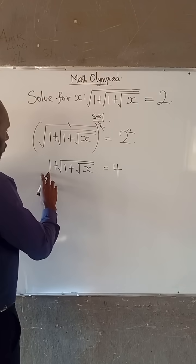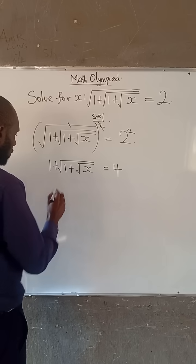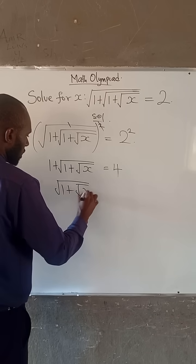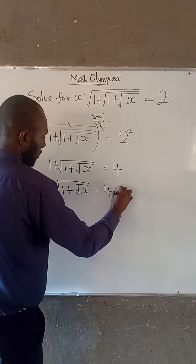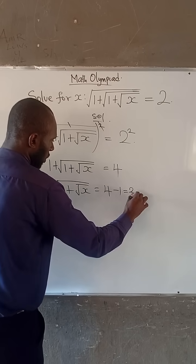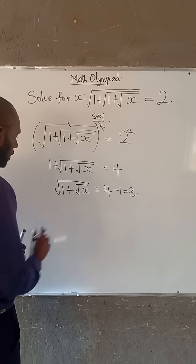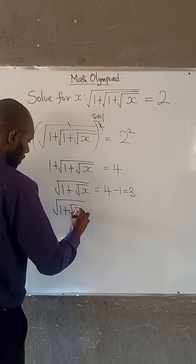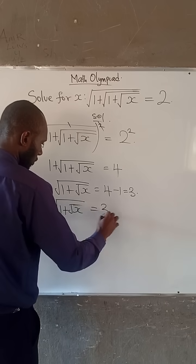Now we can move this 1 to the right hand side. So we have that root 1 plus root x equals 4 minus 1, which equals 3. So we have root 1 plus root x equals 3.